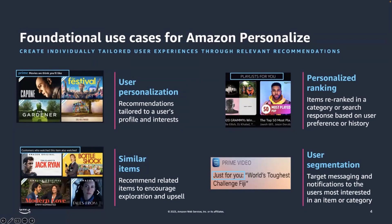One of the popular use cases in Amazon Personalize is user personalization, which provides content recommendations tailored to users' profile and interests and is more likely to drive higher conversion. It's a great fit for video-on-demand platforms like Prime Video, where you could provide personalized recommendations for movies we think you like. Another use case is Similar Items, which helps discover new content and allows businesses to upsell specific items — 'People who clicked on this item also clicked on other items' or 'Customers who bought this also bought this.'